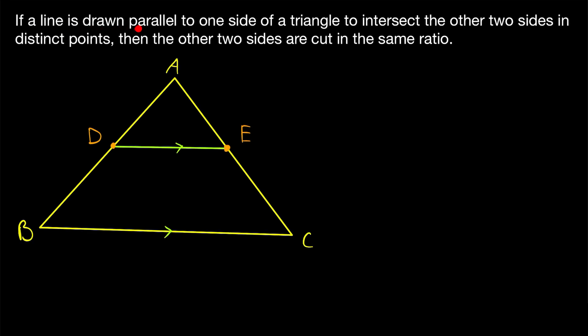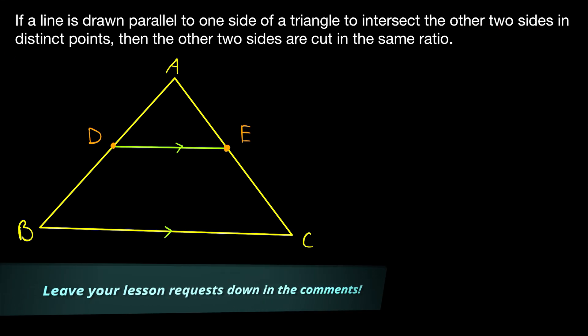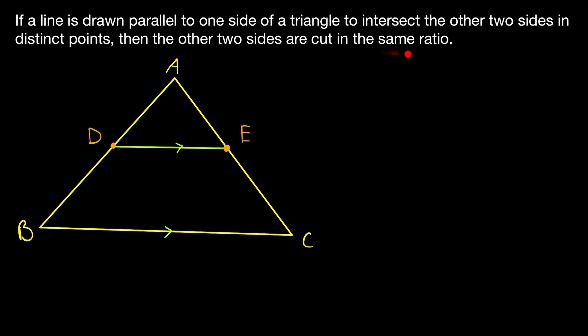If a line is drawn parallel to one side of a triangle to intersect the other two sides in distinct points, then the other two sides of the triangle are cut in the same ratio. This is the basic proportionality theorem for triangles, and we'll be proving it in today's Wrath of Math lesson.